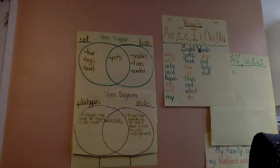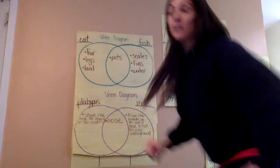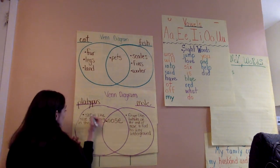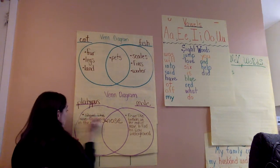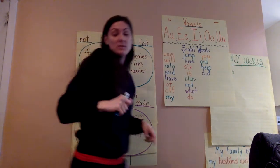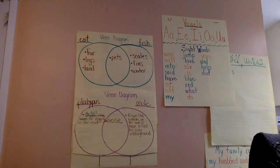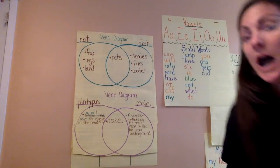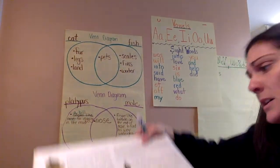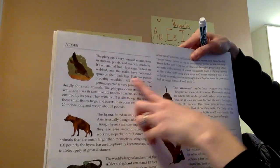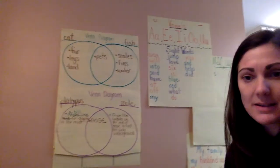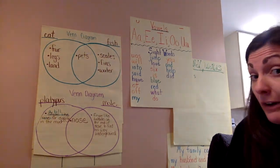I know now that that shovel-like nose is called a bill, so I'm going to fix that on my diagram. The shovel-like nose is called a bill, which is used for digging in the mud. I also learned that it's poisonous - the platypus has poisonous spurs on the back of their legs. I can't write that anywhere yet, though, because maybe a mole is poisonous too. I don't know, so let me read about the mole now.